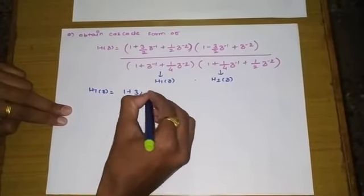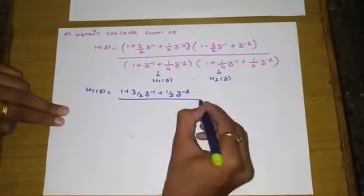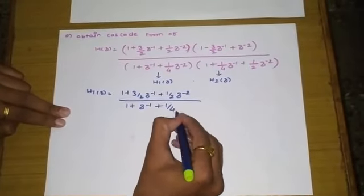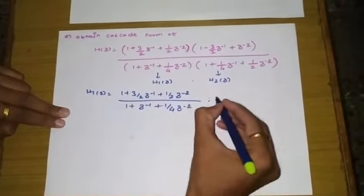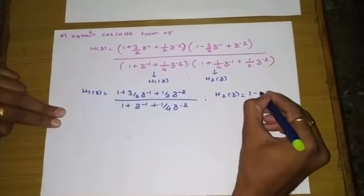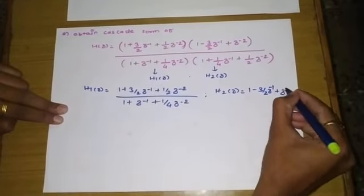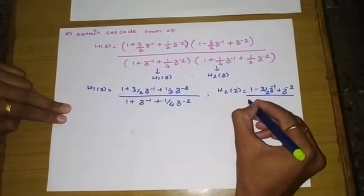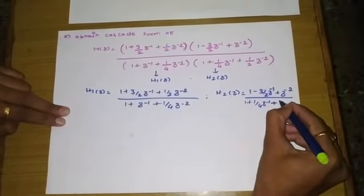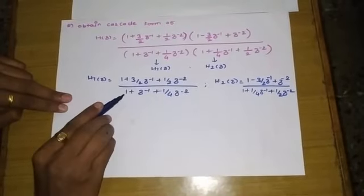H1(Z) equals (1 + (3/2)z⁻¹ + (1/2)z⁻²) divided by (1 + z⁻¹ + (1/4)z⁻²), and H2(Z) equals (1 − (3/2)z⁻¹ + z⁻²) divided by (1 + (1/4)z⁻¹ + (1/2)z⁻²). We will first realize H1(Z) using direct form 2, then cascade it with the realization of H2(Z).